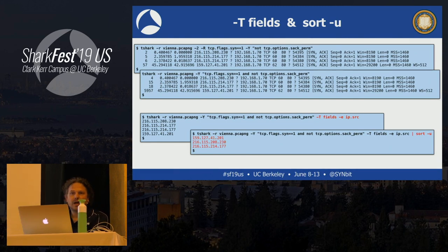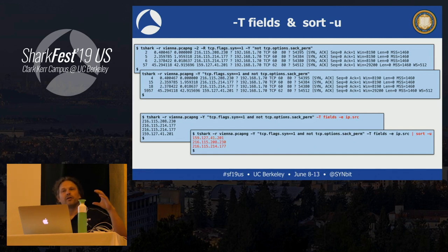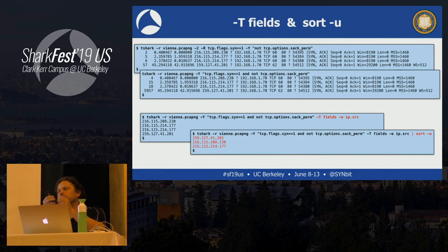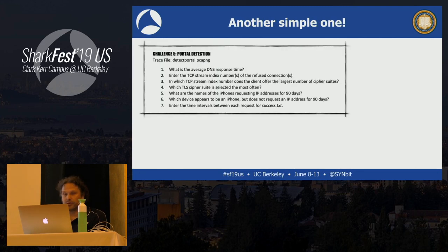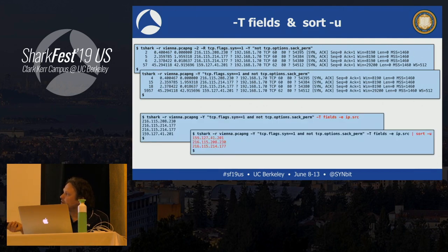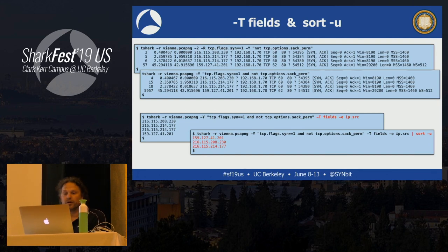By adding minus-T fields and minus-e ip.src, we print only the source IP address of matching packets instead of the default output. That gives a list of four IP addresses. However, there's a duplicate, so I'll add 'sort -u' to deduplicate. The pipe command takes output from one command and feeds it as input to the next, letting you chain transformations.